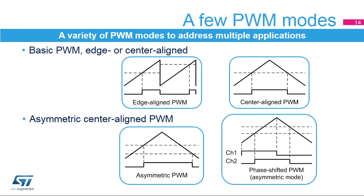The asymmetric PWM mode also allows the generation of phase-shifted PWM signals necessary to drive DC-to-DC converters based on the full-bridge phase-shifted topology. In this case, the timer provides two PWM signals with identical frequency, 50% duty cycle, and a phase shift varying from 0 to 180 degrees.